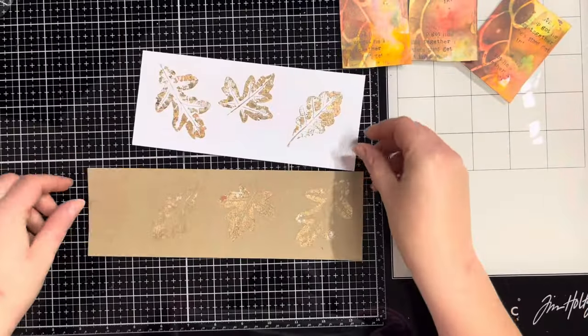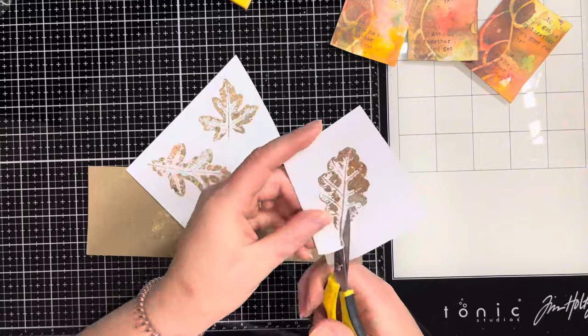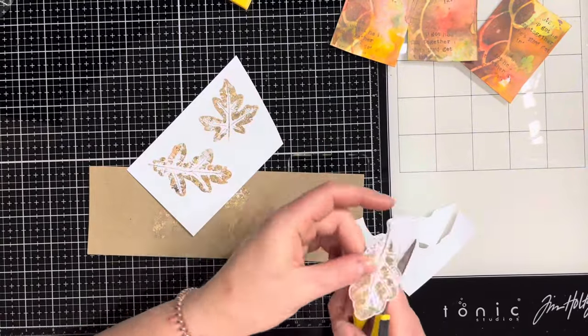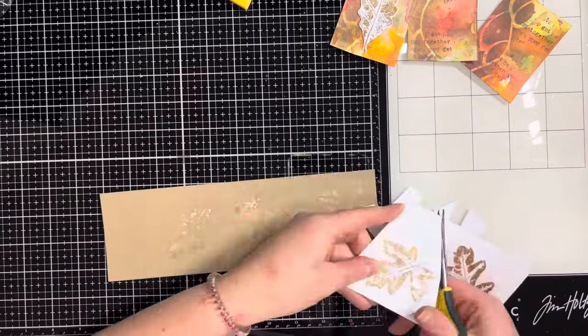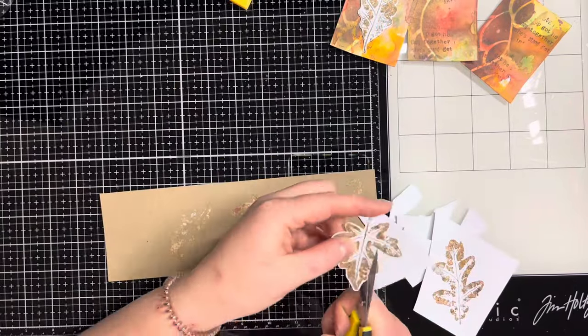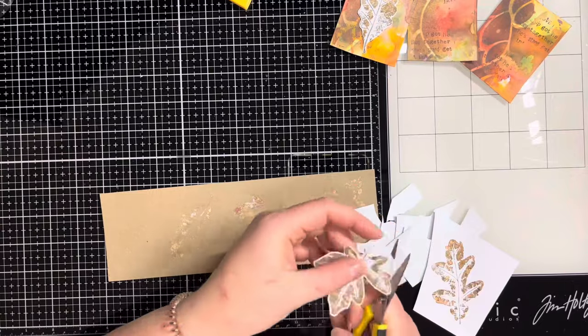Here you can see what the leaves look like when they're finished. They're really pretty but I felt they didn't stand out enough on the craft cardstock, so I decided to use the ones I stamped on white. I'm just fussy cutting them out with my Cut-a-Bee scissors so that I've got all the leaves cut out and ready to go.